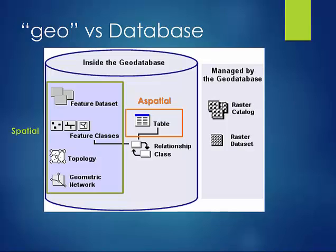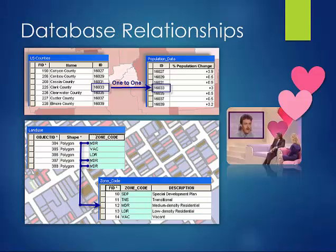A geodatabase also has spatial information, such as feature datasets, feature classes, topology, and geometric networks. In addition, a geodatabase may manage a raster catalog or several raster datasets.